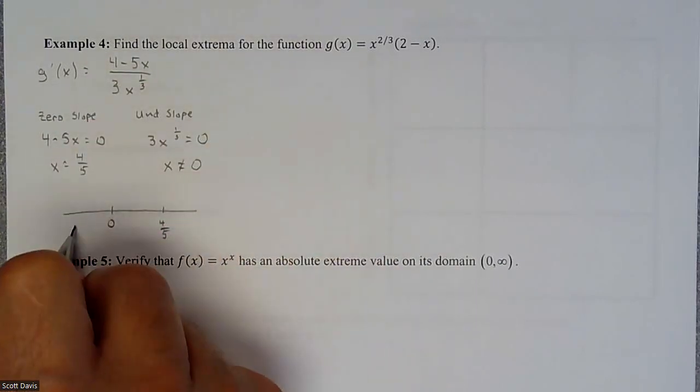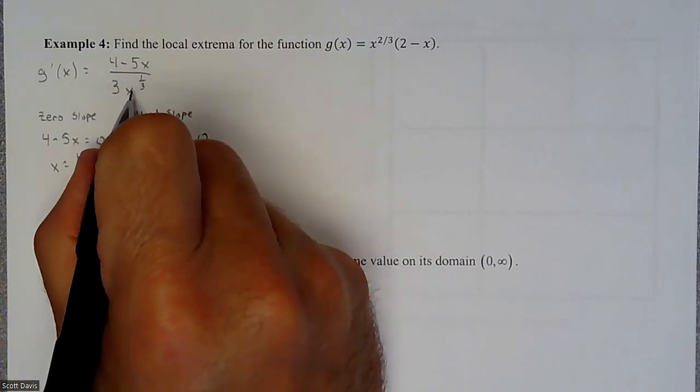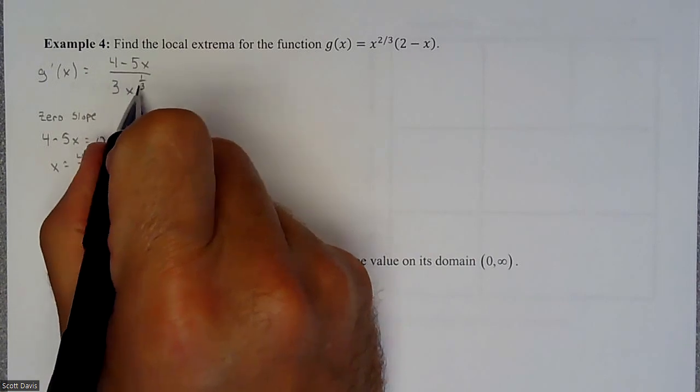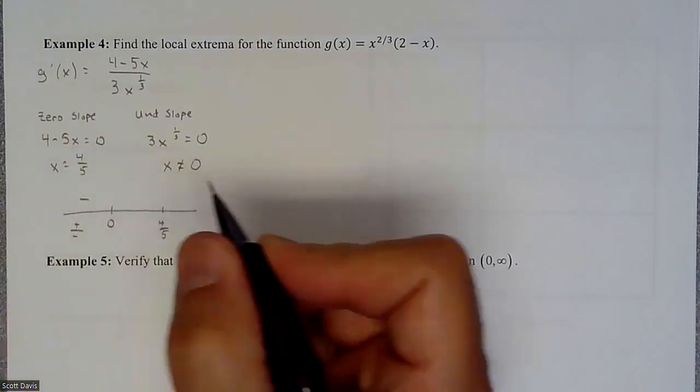And so we'd be adding those two together. So the top would be positive. And then the bottom would be a negative because we'd be plugging a negative one into this, cube rooting it, making it negative. And so if you take a positive divide by a negative, you have a negative.